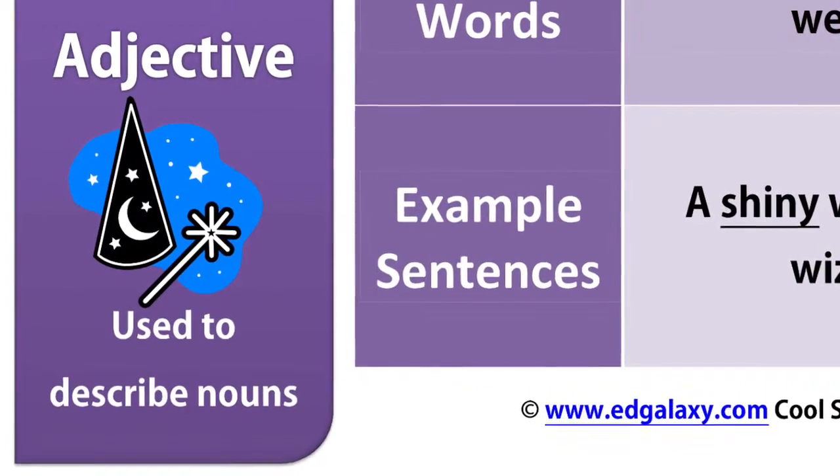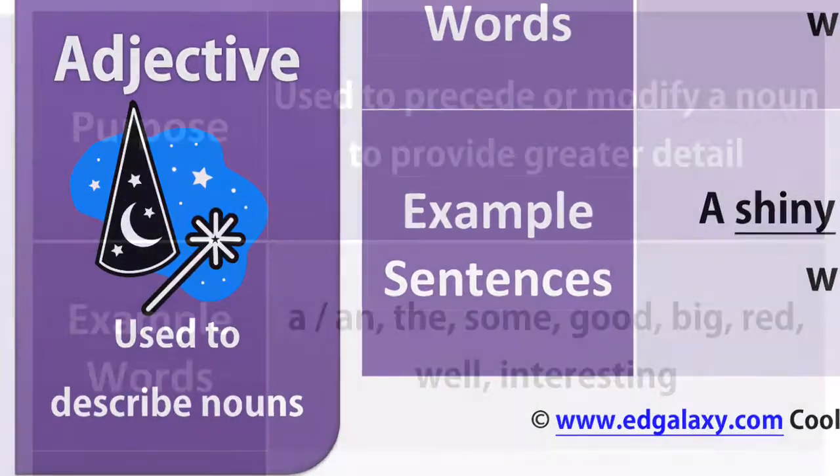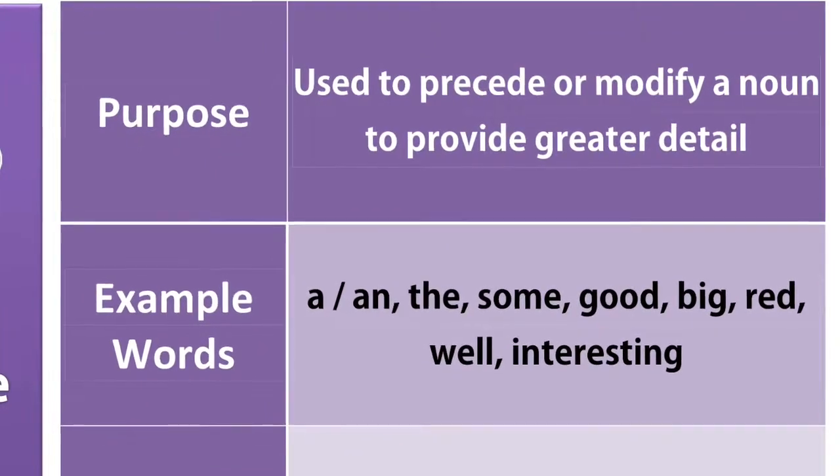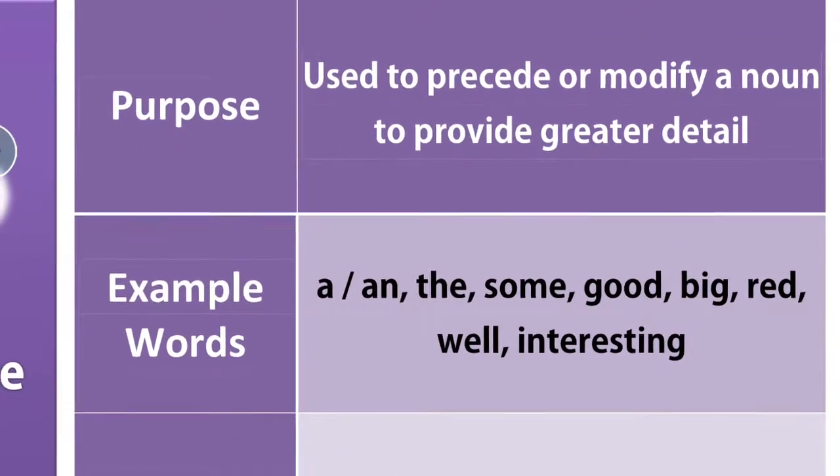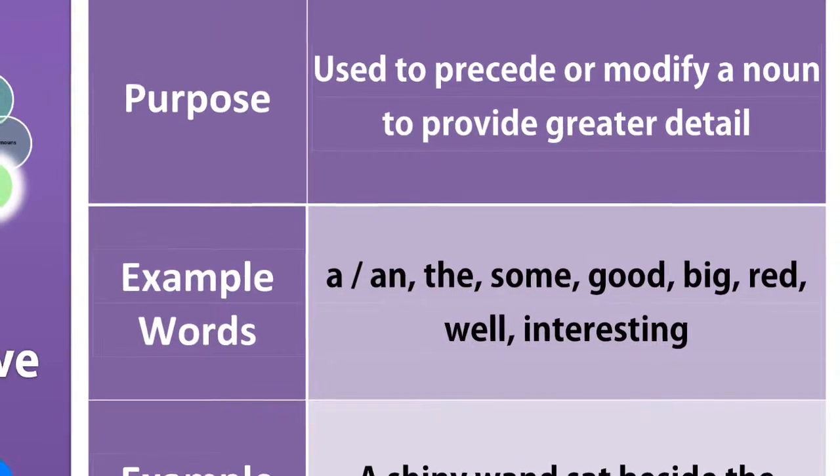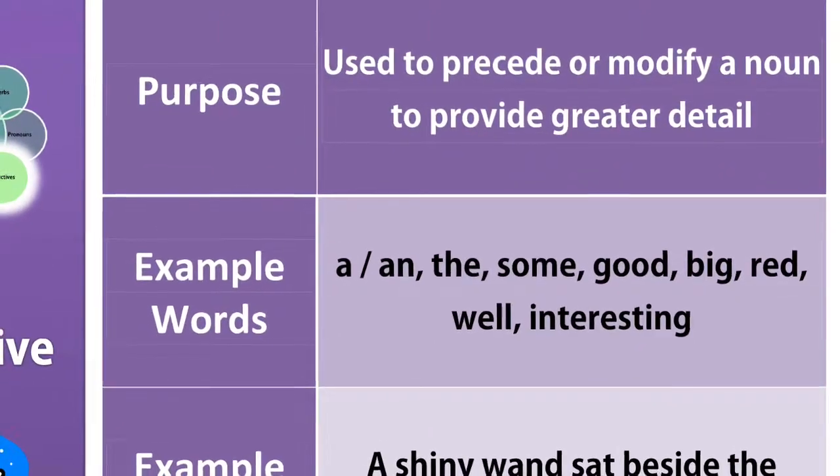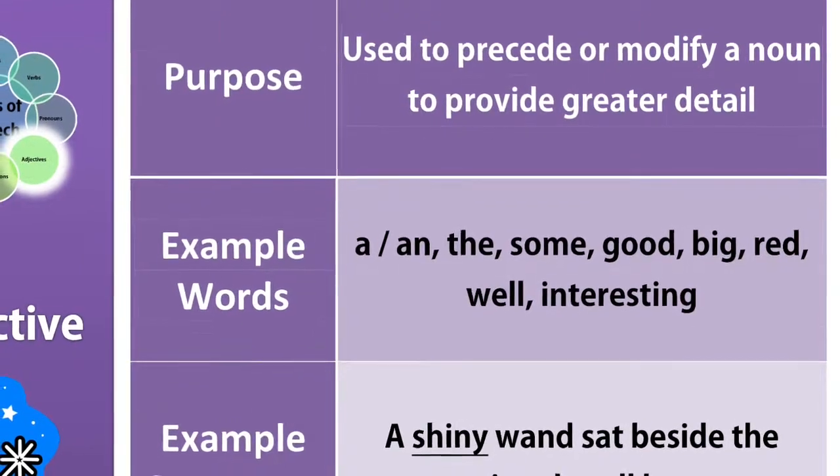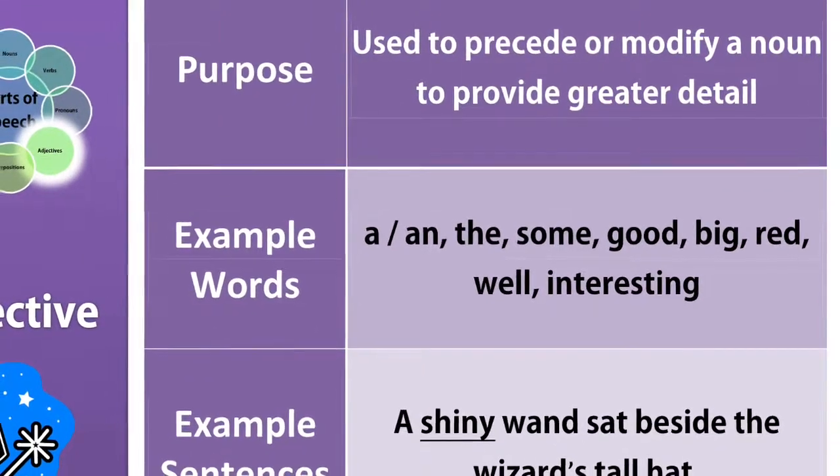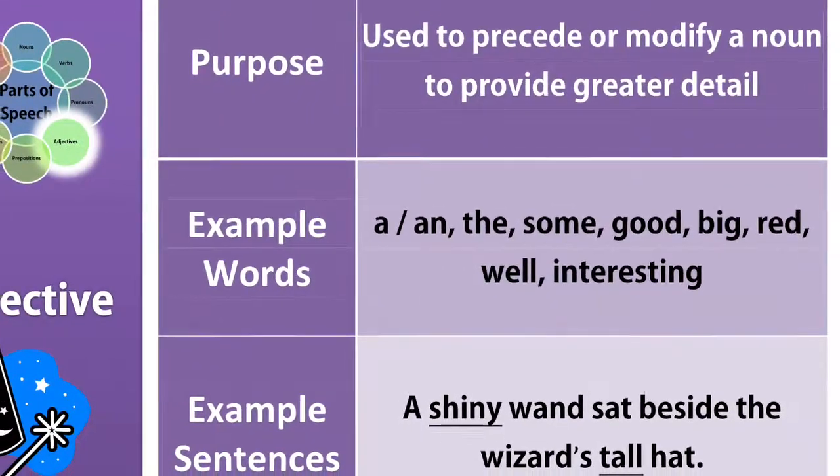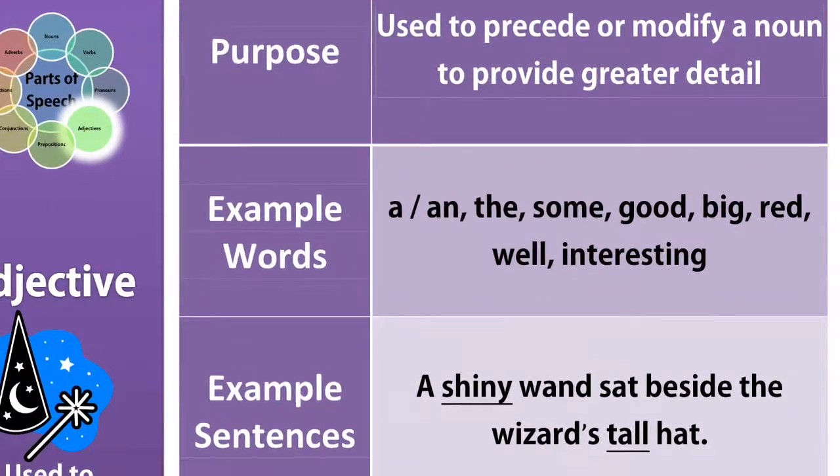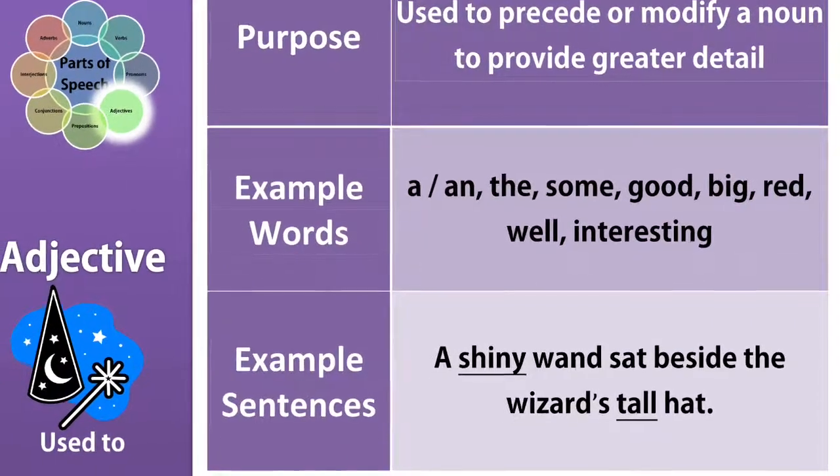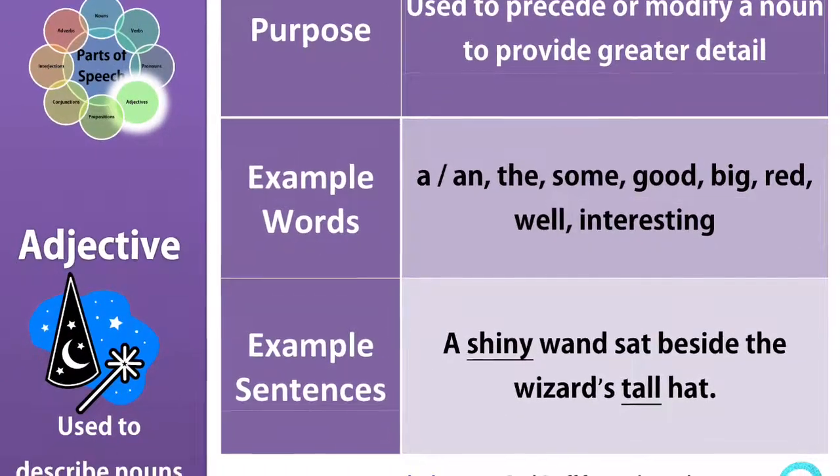Adjective. An adjective is used to describe nouns. Its purpose is to precede or go before or modify a noun to provide greater detail. Example words: a or an, the, some, good, big, red, well, interesting. Example sentences: A shiny wand sat beside the wizard's tall hat. These are describing words.